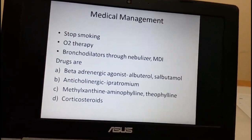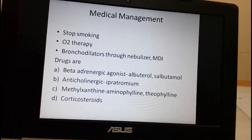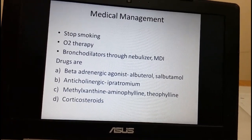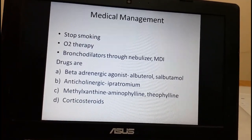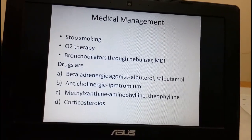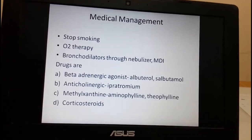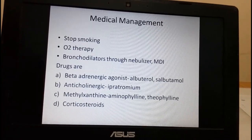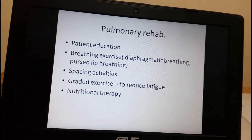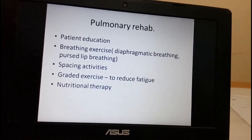Bronchodilator drugs include salbutamol and albuterol, which are beta-adrenergic agonists. Anticholinergic drugs such as ipratropium reduce secretions. Methylxanthines such as aminophylline and theophylline are another type of bronchodilator. Corticosteroids are also used to reduce overall inflammation in the long term. In all cases of COPD, pulmonary rehabilitation is an important part of medical management.